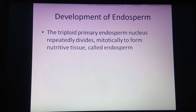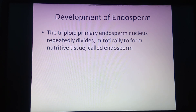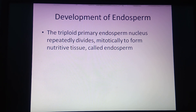Why is the endosperm triploid? Because the triploid endosperm is formed by the union of the first male gamete with the secondary nucleus. The first male gamete is haploid (n) and the secondary nucleus is diploid (2n), so n + 2n = 3n. Therefore, endosperm is triploid in nature.